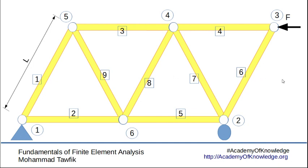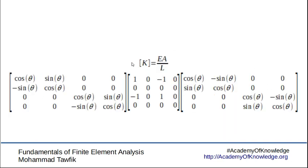So there is always a problem in identifying where to put the parts of the element matrix in the global matrix. Also, for each element there may be a different area and modulus of elasticity, not to mention the length depending on node locations, as well as the angle of rotation with respect to the global axis. That's why we need to create a register for the nodes and elements to store all this information.